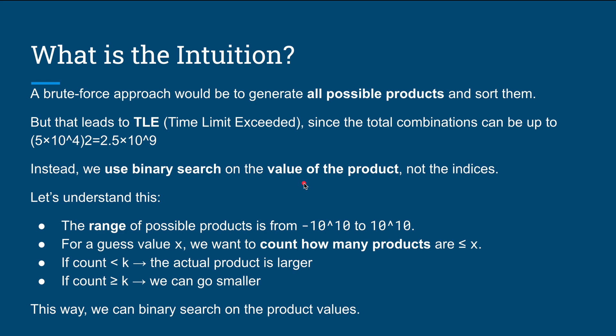We have two sorted arrays nums1 and nums2, and we want to find the kth smallest product by taking one product from each array — nums1[i] × nums2[j] where i and j are valid indices. Don't try nested loops because with more than 50,000 elements, you'll get billions of combinations. Use binary search to rescue this problem.